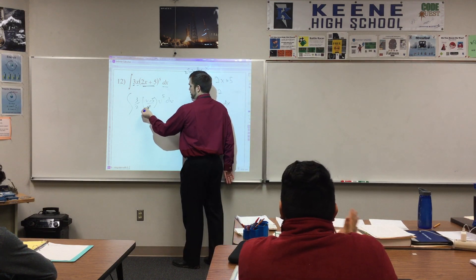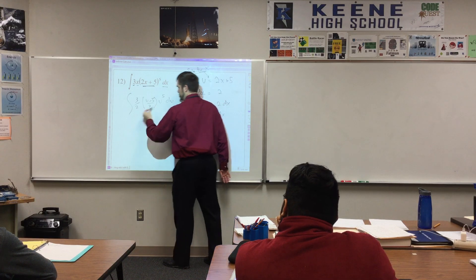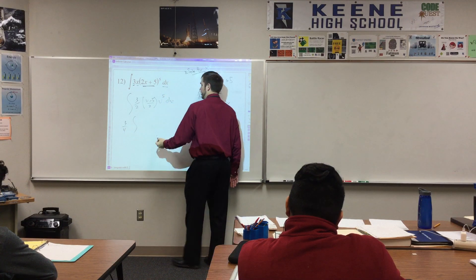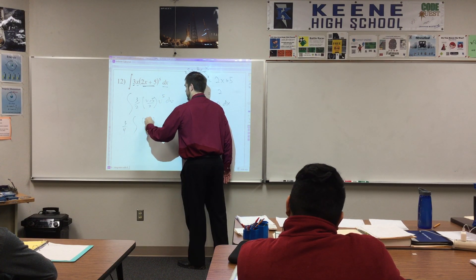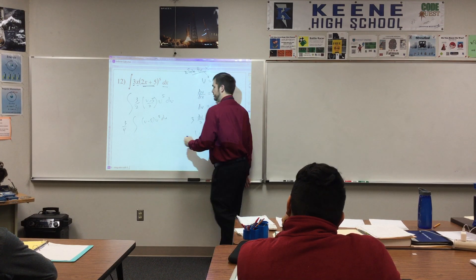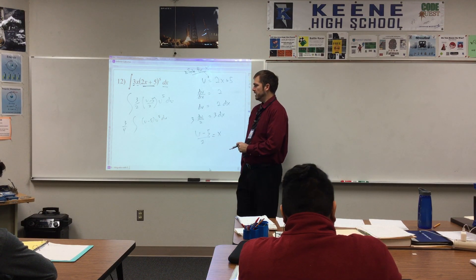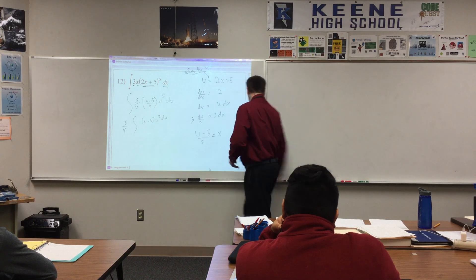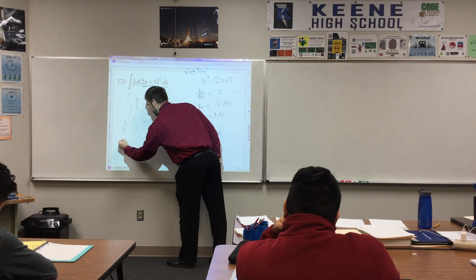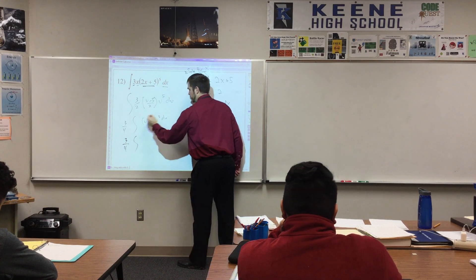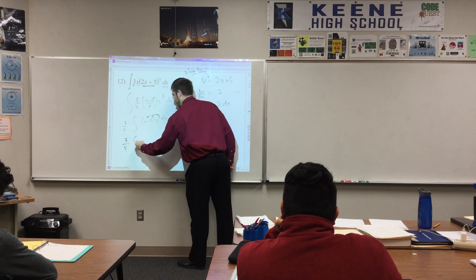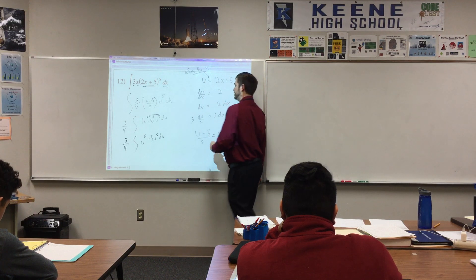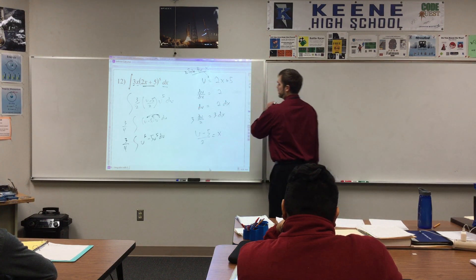Now we're just going to do a little bit of manipulation so we can get ready to do our antiderivative stuff. This 2 and the 3 halves, I'm going to pull that completely out of the integral, so we're going to write that in front as 3 fourths. And then we have u minus 5 times u to the fifth du. At this point, it's going to be best for us just to go ahead and distribute that u to the fifth. So we have 3 fourths the integral of u to the sixth minus 5 u to the fifth du.